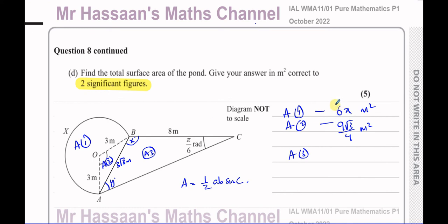Other questions from this paper can be found in the playlist appearing on screen. Other P1 radian measure and trigonometry questions can be found in the playlists shown. You can subscribe to the channel by clicking the link. The card at the top will take you to a video showing how to use the channel to revise more efficiently. Thank you for watching — see you soon.